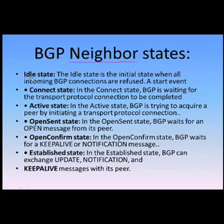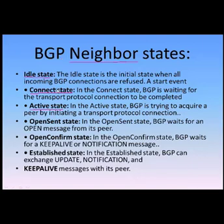The first state is Idle, which is a start event where all connections are refused. The next state is Connect, where BGP waits for a TCP connection to establish. Then the Active state, where BGP tries to acquire a peer by initializing the transport protocol. Open state is where BGP waits for an Open message from its peer. Open Confirm is where BGP waits for Keepalive or Notification messages. Finally, in the Established state, BGP can exchange Update, Notification, and Keepalive messages with its peer.